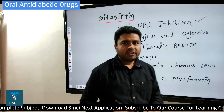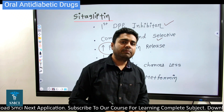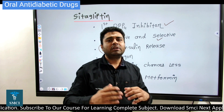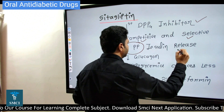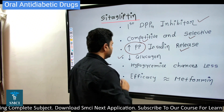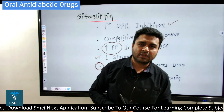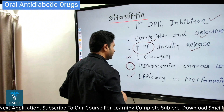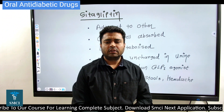Sitagliptin reduces postprandial blood glucose very effectively, because after a meal the GIP and GLP analogs are released much more, their metabolism is inhibited, and it increases postprandial insulin release. It also decreases glucagon, thereby reducing glucose secretion. A major benefit is that the chances of hypoglycemia are very rare, and the efficacy is as good as metformin.